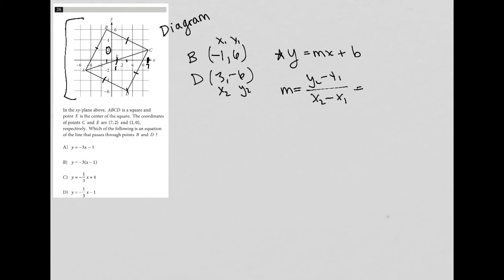And therefore, it will be negative 6 minus 6 over 3 minus negative 1, which is equal to negative 12 over 3 plus 1, which is 4, which means that M is equal to negative 3. So that takes care of that.